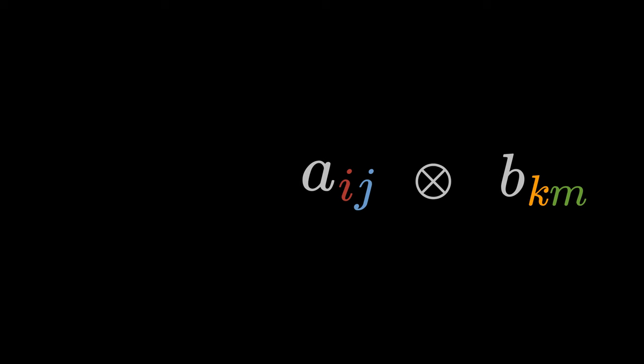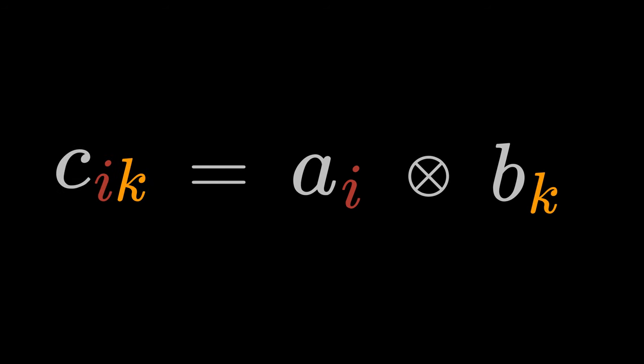If, on the other hand, we form the tensor product of first order tensors Aij and Bk, the result is a second order tensor Cik. This is how the tensor product works with two tensors of any order.